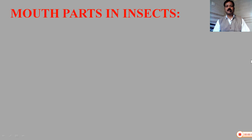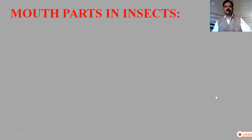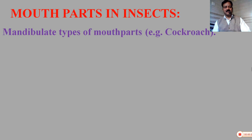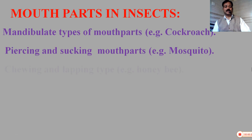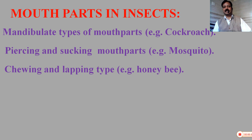In this video, I will explain mouth parts in insects. As we know that insects are modified in various habitats, it may be due to the presence of various types of mouth parts. These mouth parts are: piercing and sucking type, mandibular type, and chewing and lapping type of mouth parts. In this video, I will explain these three types of mouth parts.